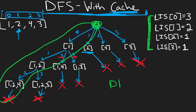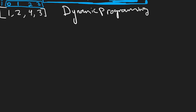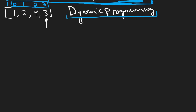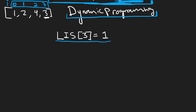Now if you want to do the dynamic programming solution, you might notice how we're doing this recursively — we're starting at the last index and then working our way backwards to zero. So can we use that to do dynamic programming? We're going to start at the last index three and work our way backward. This is kind of the base case: no values come after it, so the longest increasing subsequence from here is length one. LIS[3] = 1.